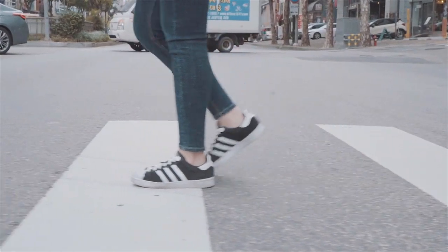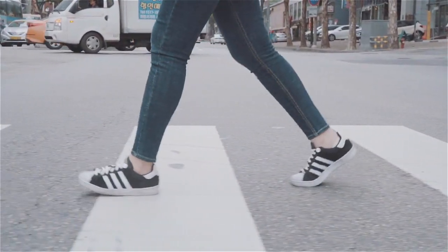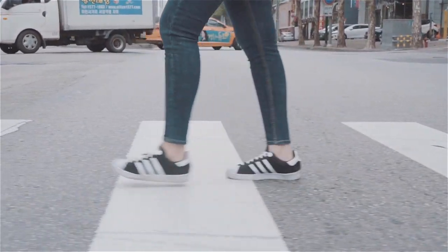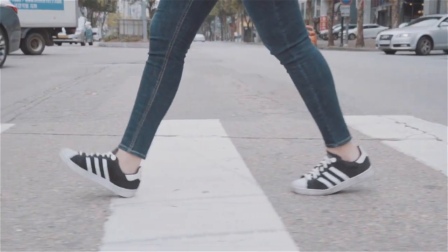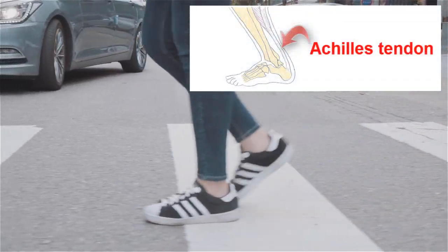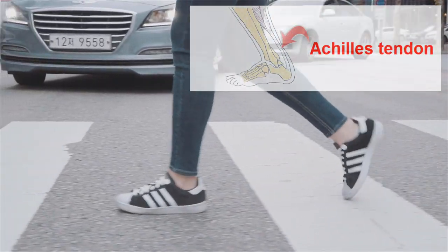Similarly, in humans, we use the elasticity in our tendons to conserve energy during walking and running. The elastic energy storage is so important because we lose energy every time our feet hit the ground. The Achilles tendon stores energy during dorsiflexion and releases it during plantarflexion.